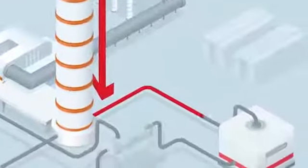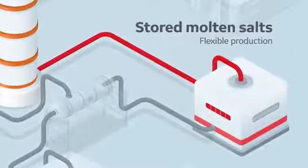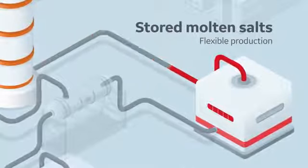Then they go down to a second tank, where they're stored. They can then store this energy to maintain electricity production for several hours after sunset.